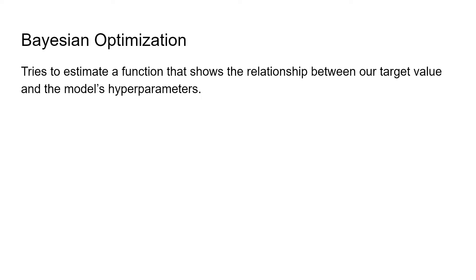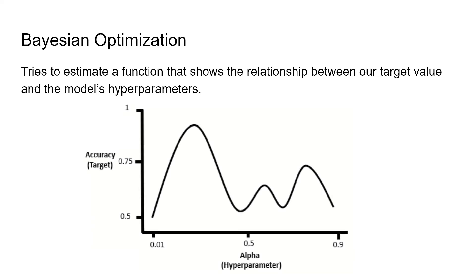The next hyperparameter optimisation method is Bayesian optimisation. Essentially, what we're trying to do is estimate a function that shows the relationship between our target value and the model's hyperparameters. In this example, we're looking at the hyperparameter alpha, and our target is accuracy. We can see a function showing the relationship between the hyperparameter and the target. With Bayesian optimisation, this function is not known, but we're trying to estimate it. Once we find this function, we can look at what alpha value yields the highest accuracy, which in this case is around 0.25.